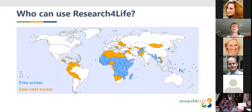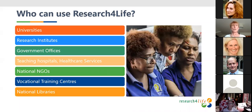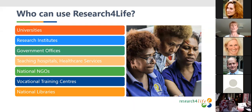Research for Life is available in about 125 countries globally. On this slide, countries colored in blue receive free access — those are Group A countries. Countries colored in yellow receive low-cost access — those are Group B countries. The program is institutional: we don't work with individuals, only through institutions, all of which are non-profit entities. These include universities, research organizations and institutes, government departments and offices, teaching hospitals and healthcare services, national NGOs, vocational training centers, national libraries, and others. We have very strict eligibility criteria, all within this non-profit research context.